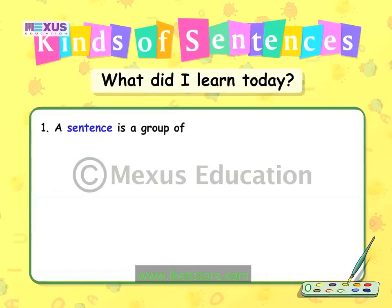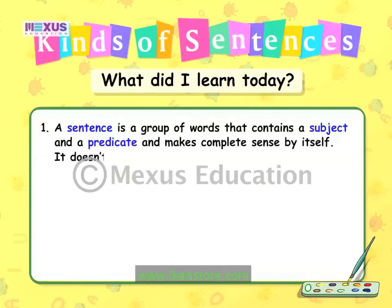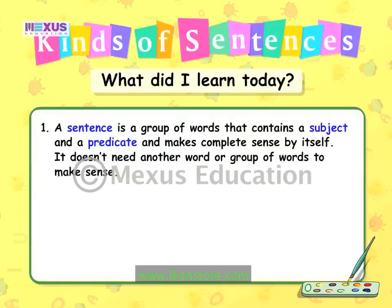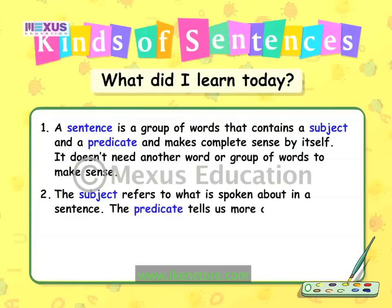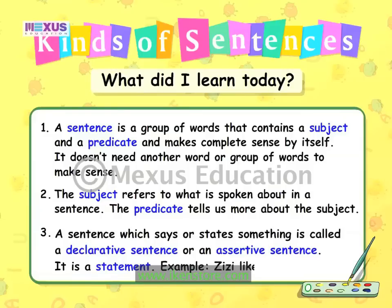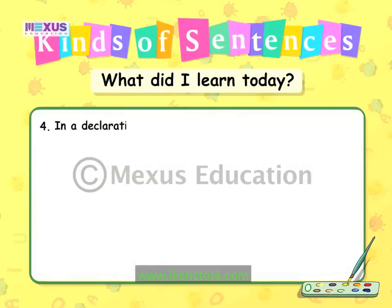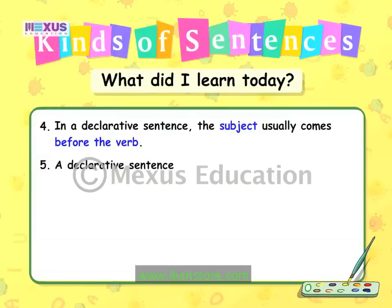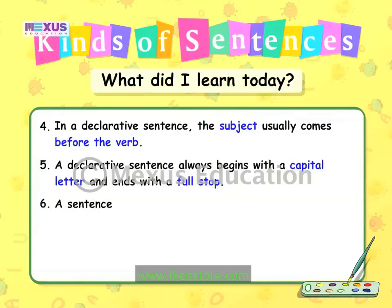A sentence is a group of words that contains a subject and a predicate and makes complete sense by itself. It doesn't need another word or group of words to make sense. The subject refers to what is spoken about in a sentence. The predicate tells us more about the subject. A sentence which says or states something is called a declarative sentence or an assertive sentence — it is a statement. Example: Zizi liked the poster. In a declarative sentence, the subject usually comes before the verb.